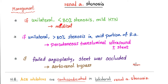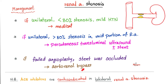For management of renal artery stenosis: if it's unilateral and less than 80% stenosis, use medical management. These patients have high blood pressure and may benefit from ACE inhibitors. However, do not give ACE inhibitors in bilateral renal artery stenosis. If the stenosis is unilateral but greater than 80% of the arterial diameter, intervention is needed — percutaneous transluminal angioplasty with or without stent placement, done through the skin.